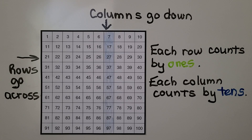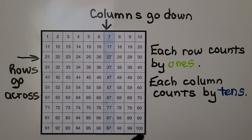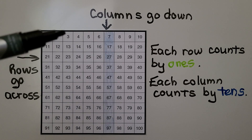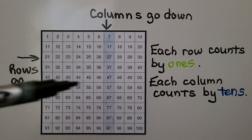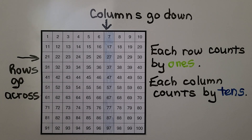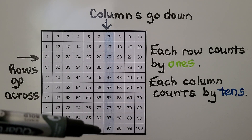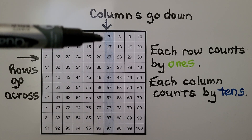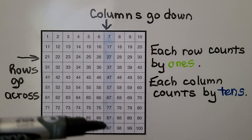Here we have a hundred chart. We can see that we start at 1 and it goes to 100, and each row counts by 1s: 1, 2, 3, 4, 11, 12, 13, 14. It's counting by 1s in the rows going across, and each column coming down counts by 10s. We go from 7 to 17 to 27 — it's 10 more coming down.